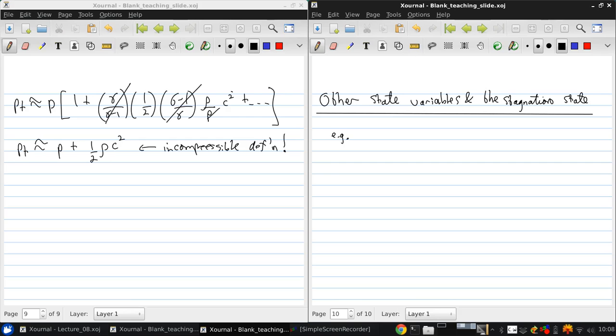So, for example, we could think about the density rho t over rho. Well, what would that be equal to? Well, from P equals rho RT, rho t over rho is just pt over p times T over Tt. And so rho t over rho is 1 plus gamma minus 1 over 2 Mach number squared to the gamma over gamma minus 1 minus 1.